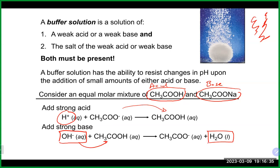It is really only the free H⁺ or OH⁻ ions floating around in the solution that have a big effect on pH. Since they get incorporated into other species, the levels of H⁺ and OH⁻ remain relatively constant, and thus the pH remains relatively constant as well.